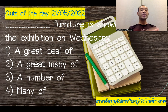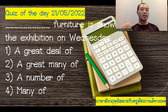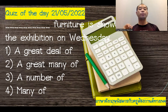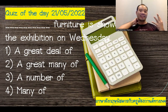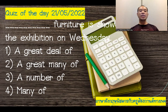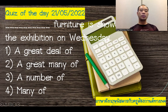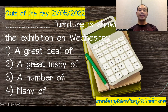For the quiz, there's a blank and then after that, the word 'furniture' is showed at the exhibition on Wednesday. The options are: first, a great deal of; second, a great many of; third, a number of; fourth, many of.